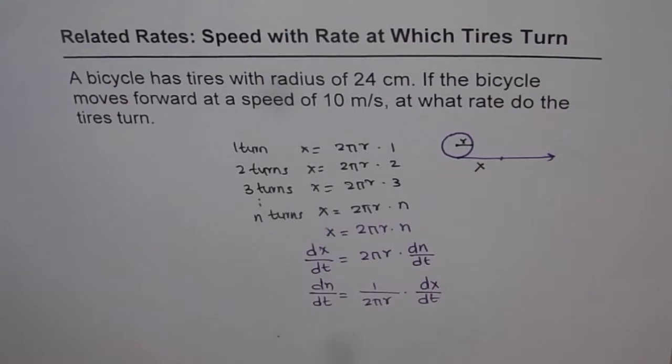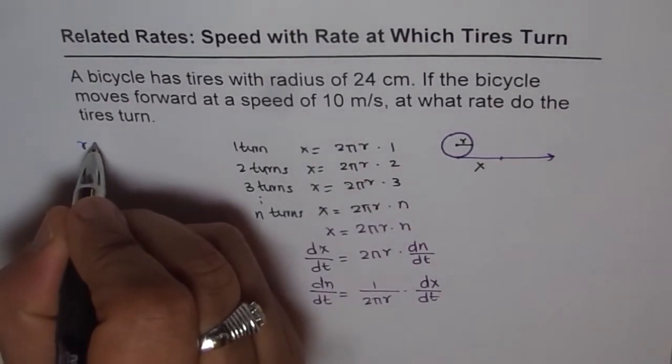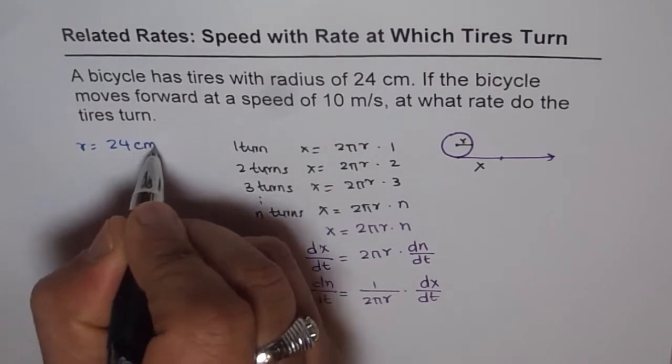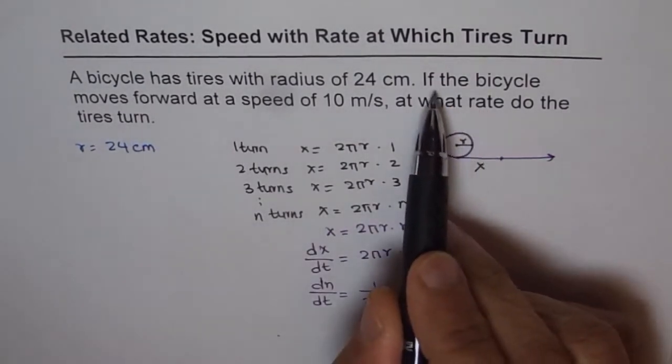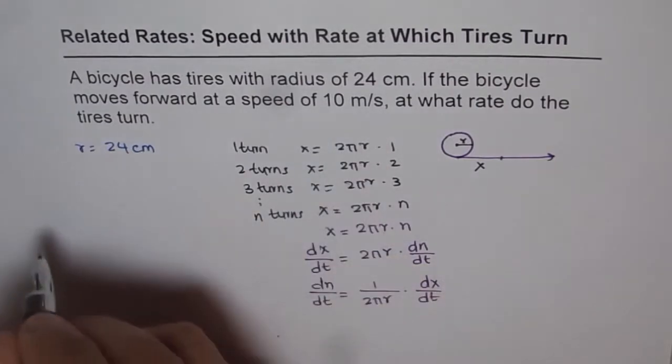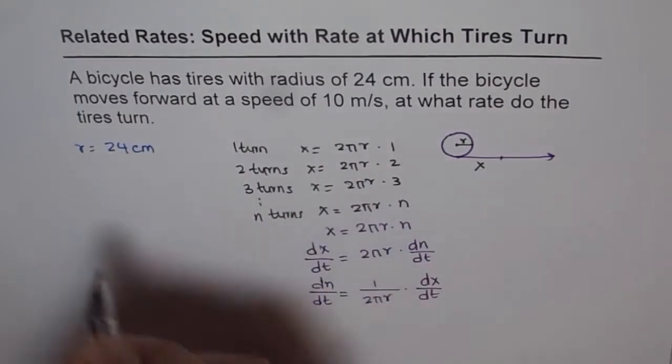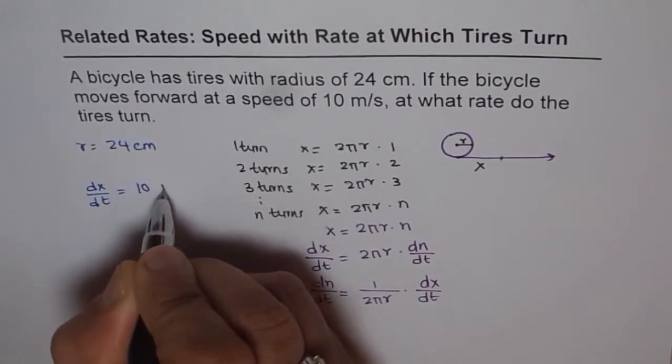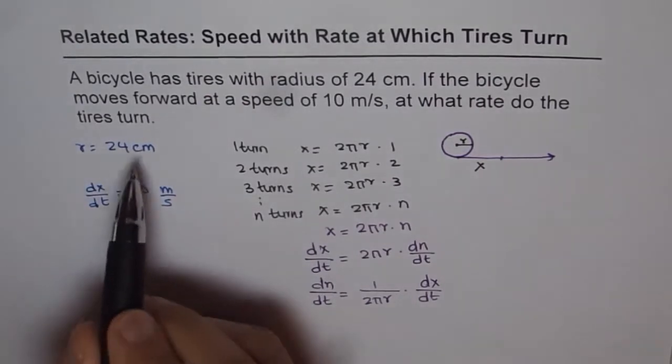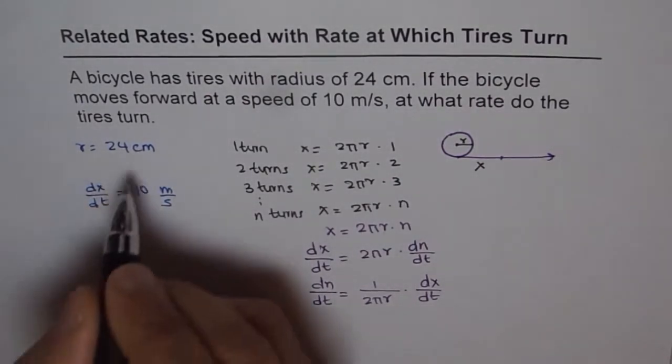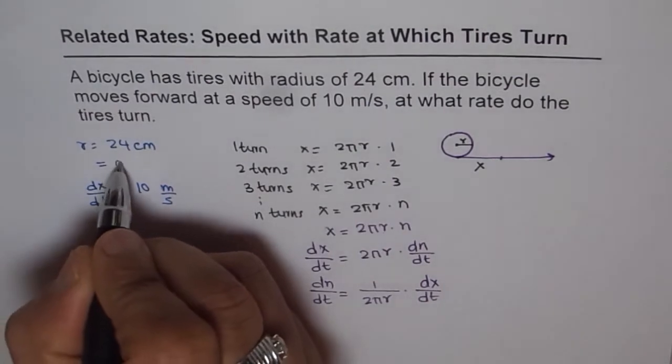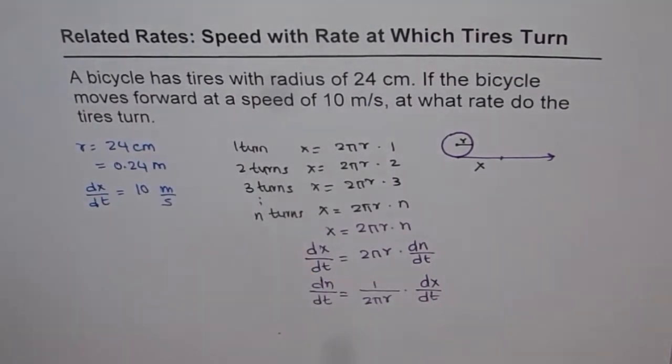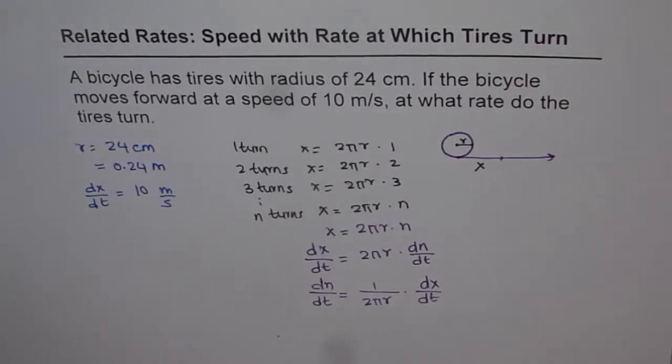What are we given? We are given radius, which equals 24 cm. The bicycle moves forward with a speed of 10 m per second. Speed forward is dx/dt. So we are given dx/dt is 10 m per second. The units are different, so let's convert them into the same units. We get 0.24 m. In 1 m there are 100 cm, so you divide by 100.